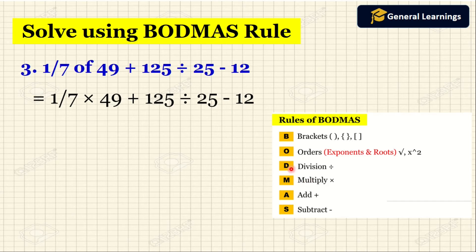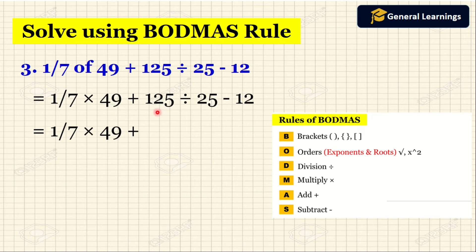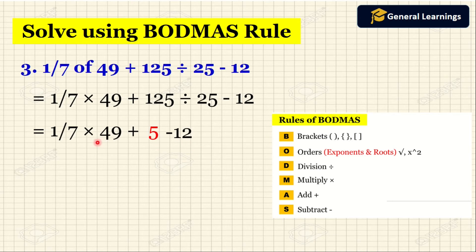According to the rule, first we need to do division. We write 1 by 7 into 49 plus as it is, then divide 125 by 25 to get 5, then write minus 12 as it is. Now the operations we have are multiplication, addition, and subtraction. First we need to do multiplication.